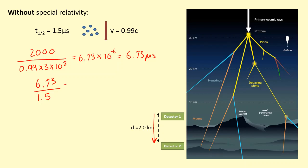We get approximately 4.49 half lives. So if we have 100 percent at detector one, how much is left over at detector two? If we do 100 times half to the power of the number of half lives, so 4.49, we're basically multiplying by half 4.49 times. This gives us 4.5 percent.